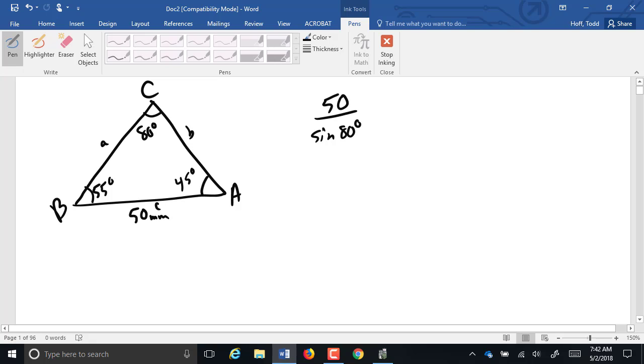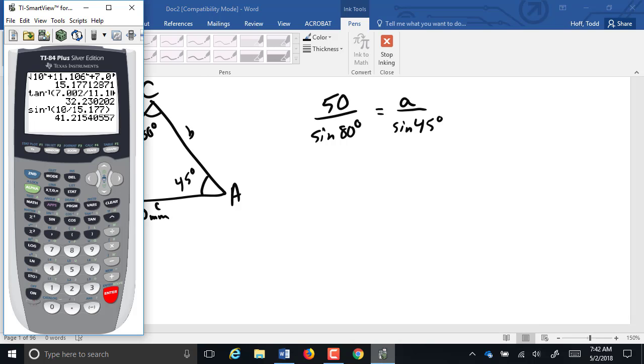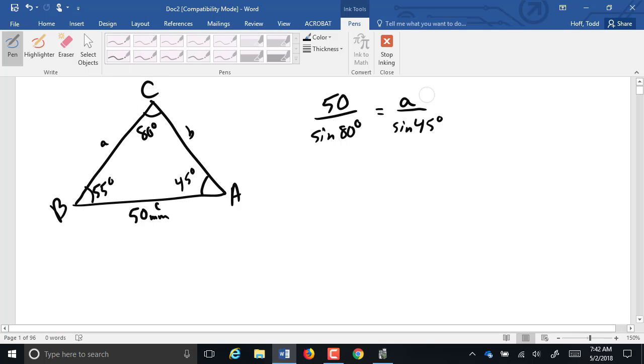I have one side 50. Sine of the opposite angle would be opposite from the 80, right? So 50 over sine of 80 equals A over sine of 45. Since I'm looking for a side, there's no inverse. So 50 times sine of 45 divided by sine of 80 equals 35.9 millimeters.